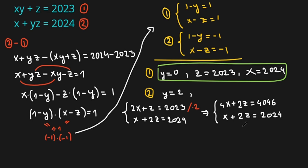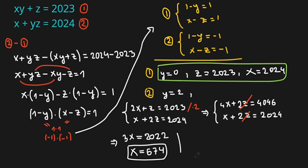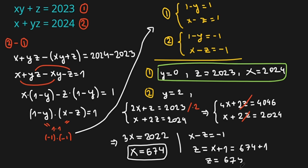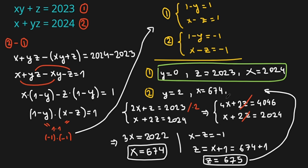I'm going to multiply both sides of the first equation by 2, giving 4x plus 2z equals 4046. Subtracting the second equation from that gives 3x equals 2022, so x equals 674. From x minus z equals minus 1, z equals x plus 1 equals 675. So from the second case: y equals 2, x equals 674, z equals 675.